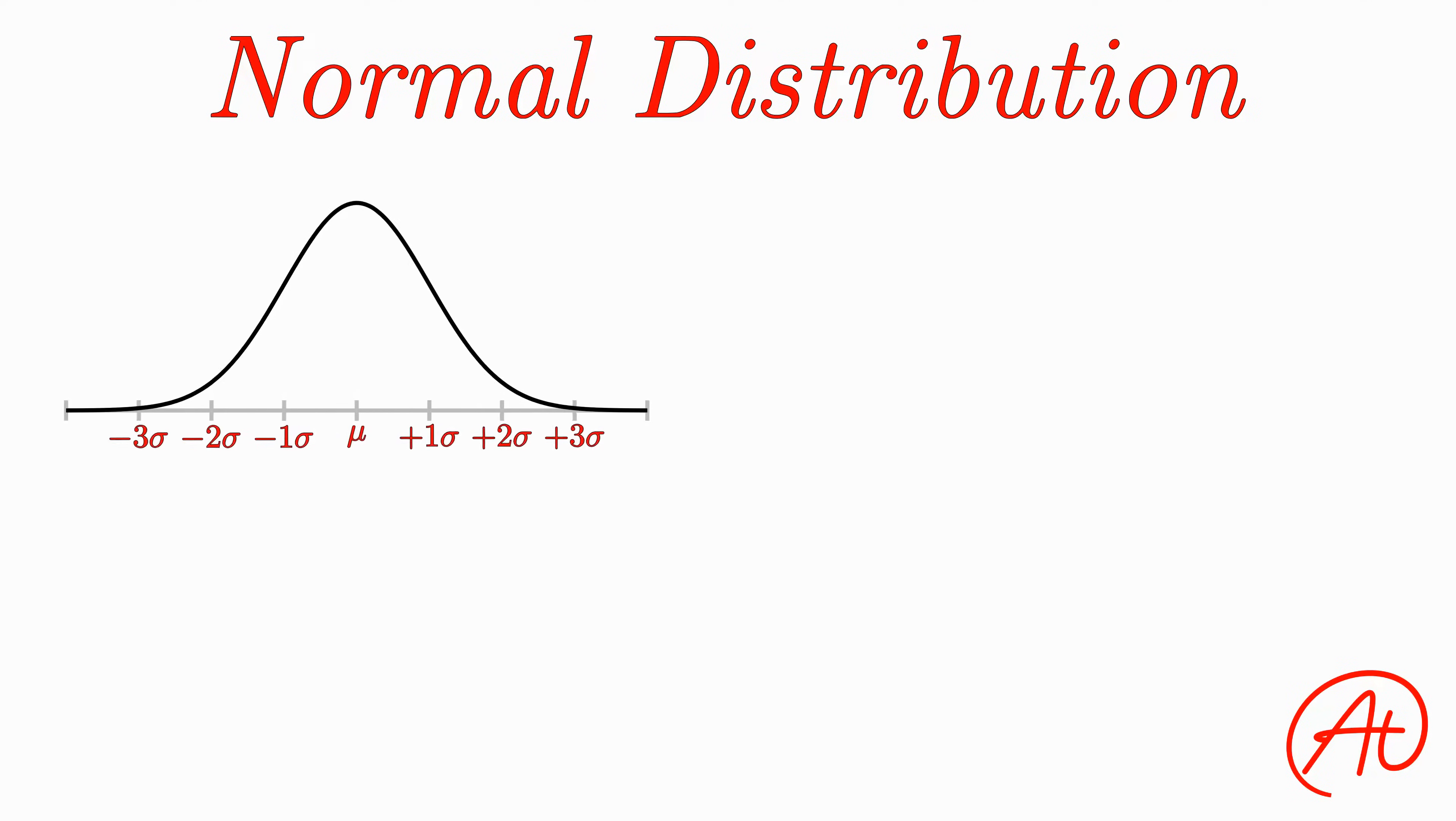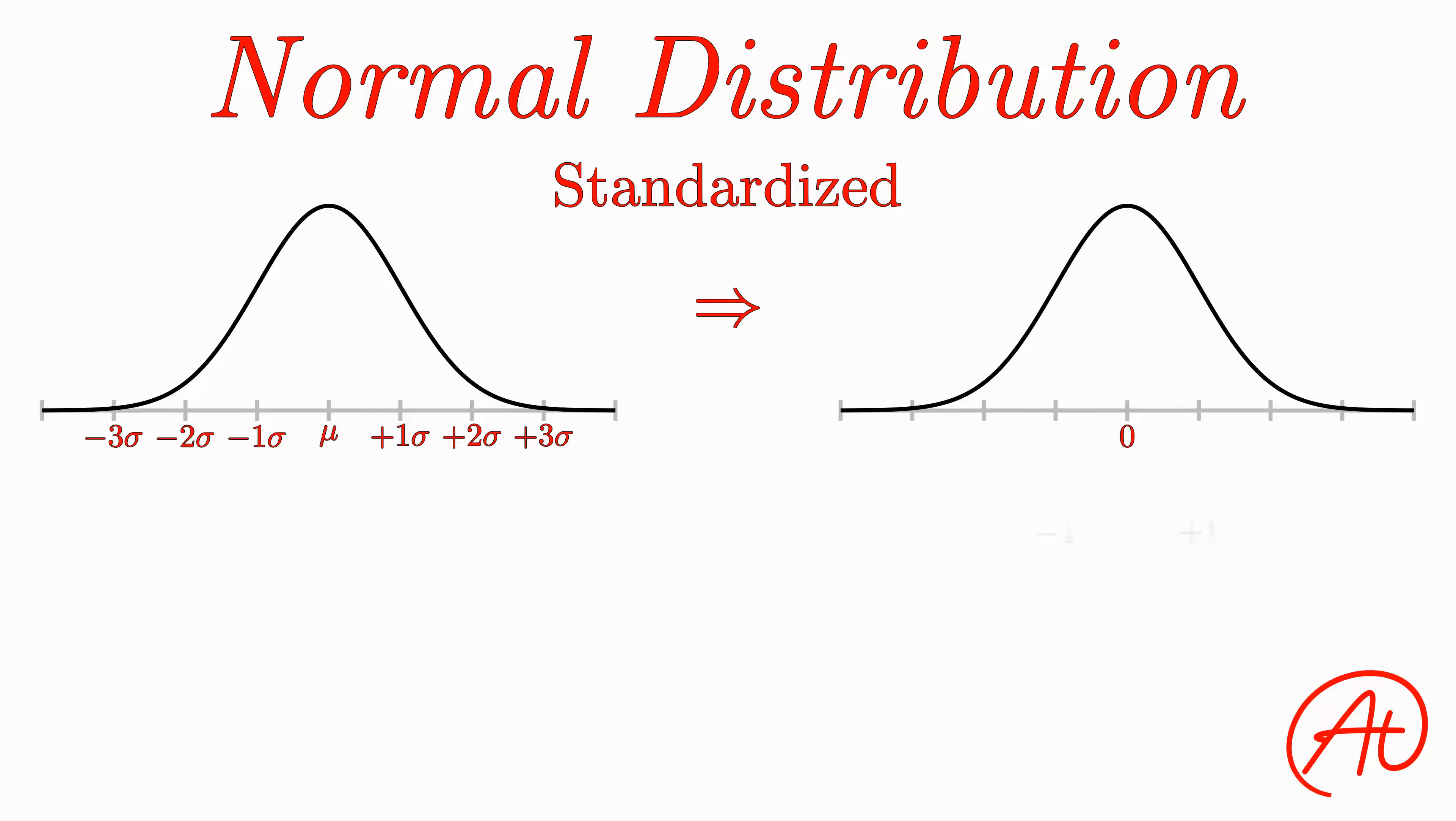To solve this issue, instead of keeping the data in its original units, we get rid of the units by doing what's called standardizing the data. Essentially, we take our original distribution and transfer it to have a mean of zero and standard deviation of one. As a result, any normal distribution of any magnitude or unit type can be converted to be centered around zero and extend more or less from negative three to positive three.